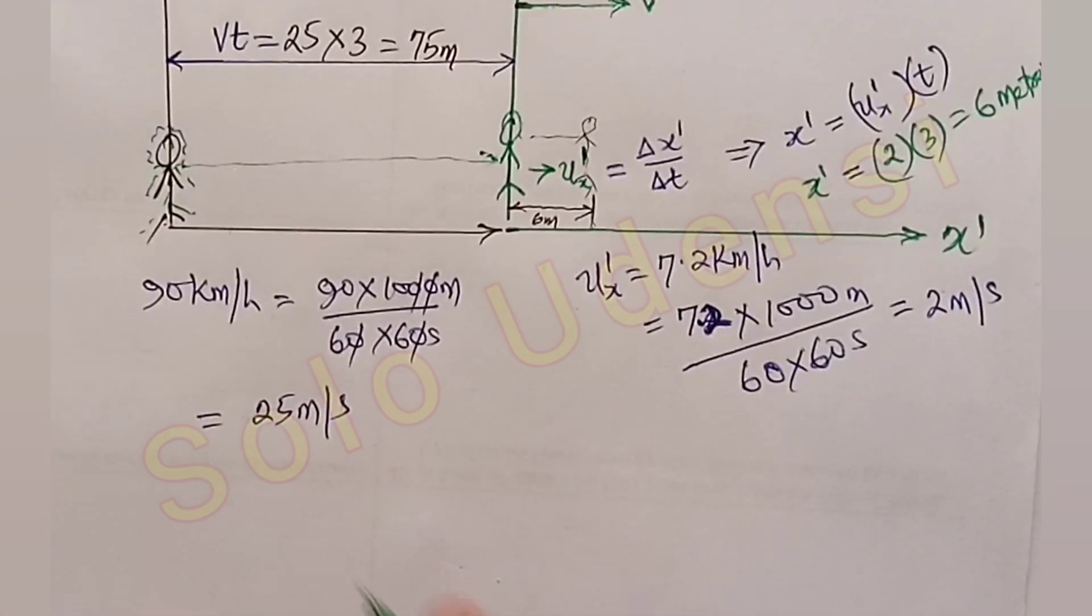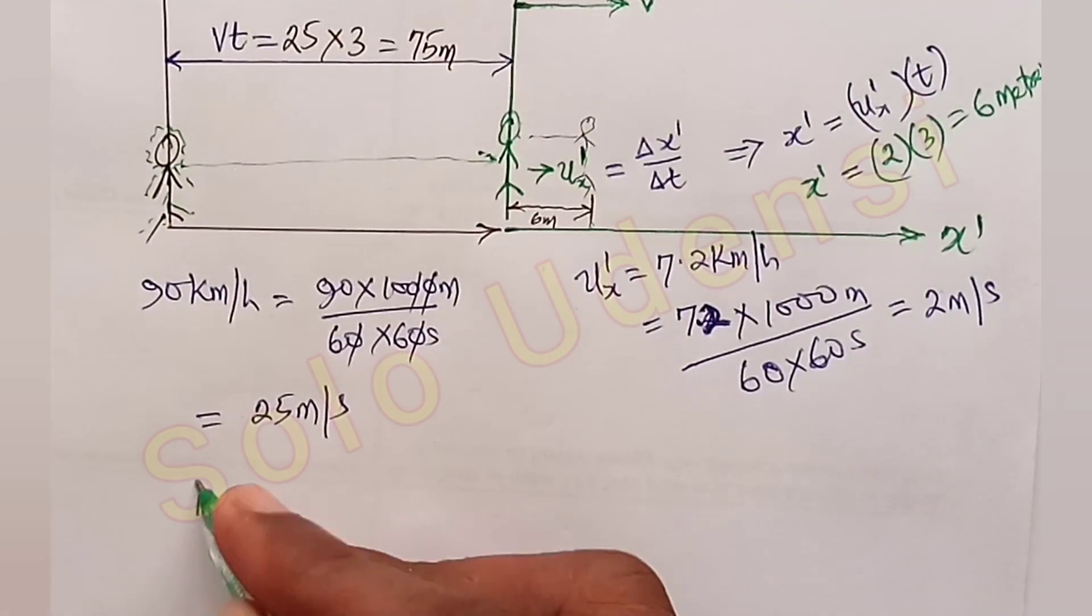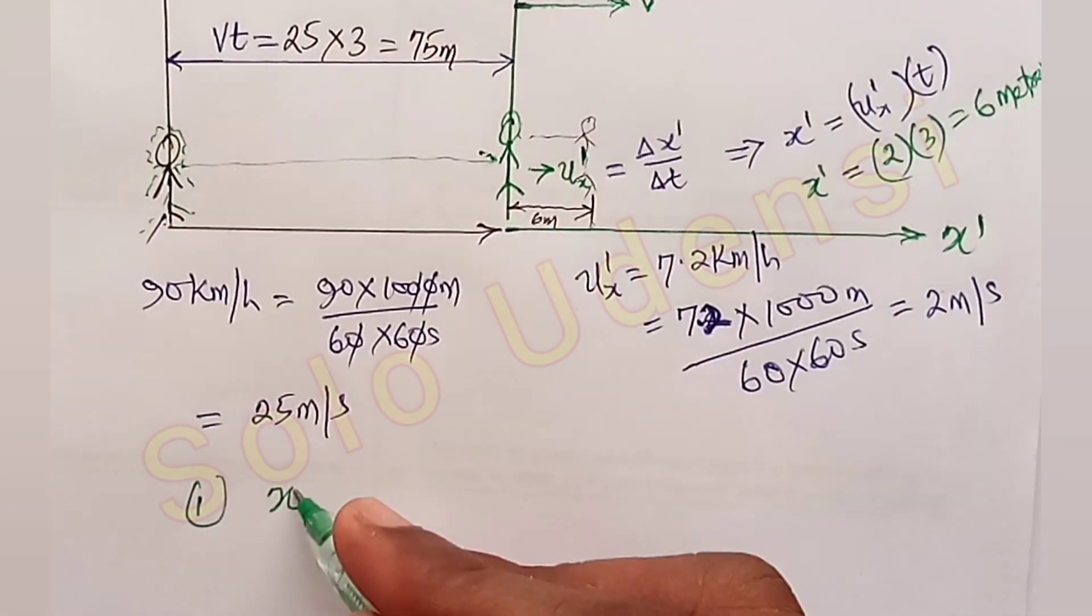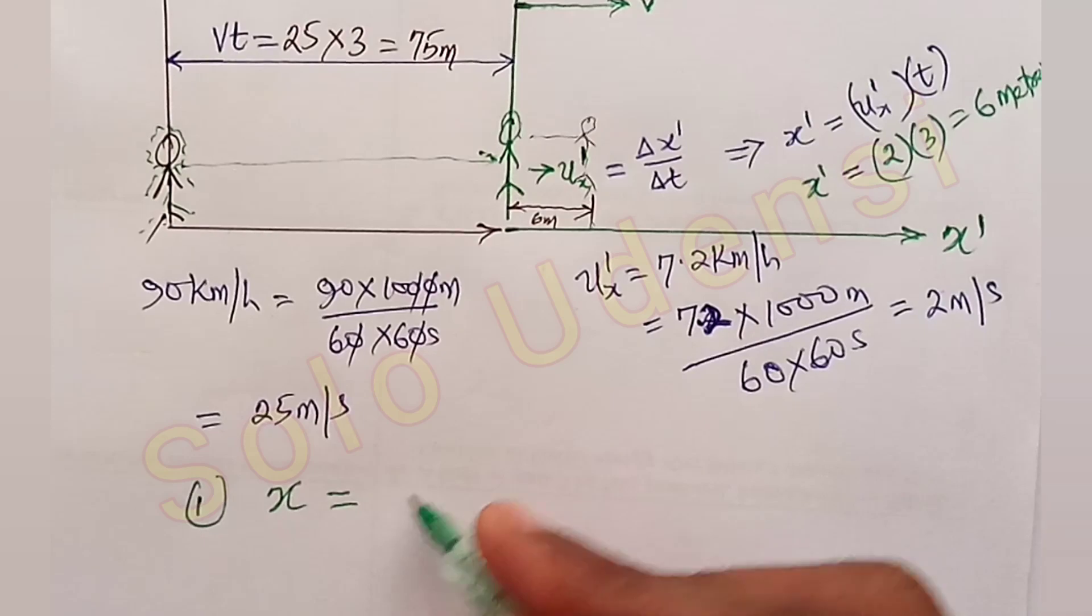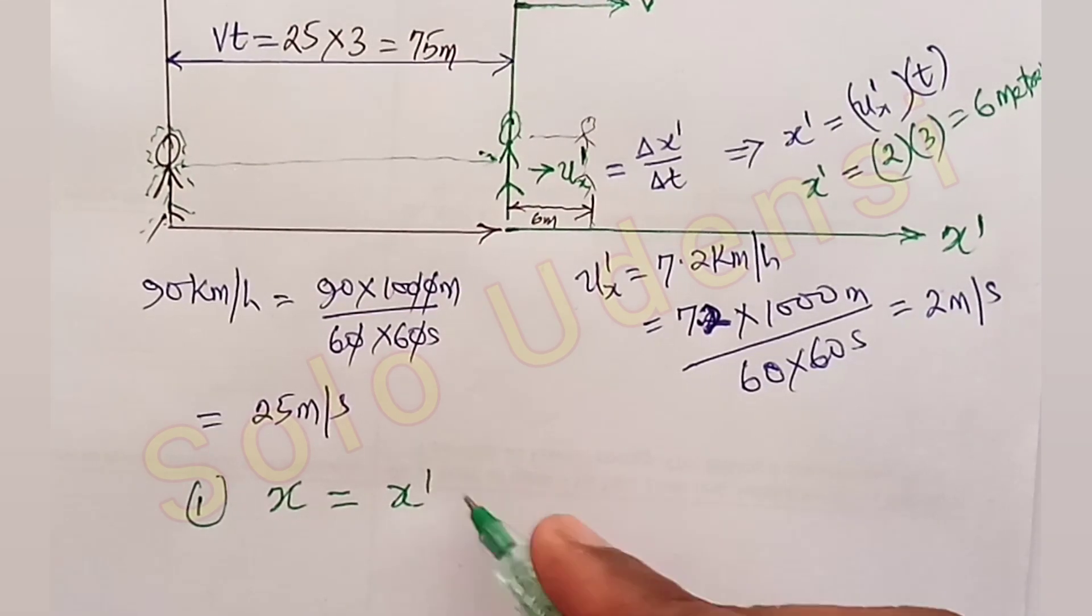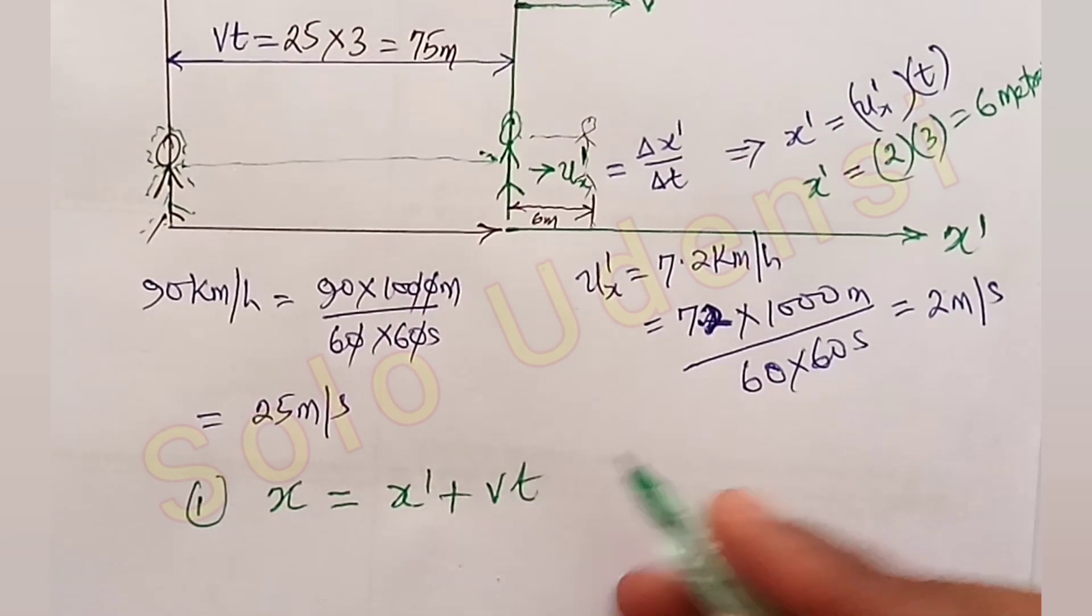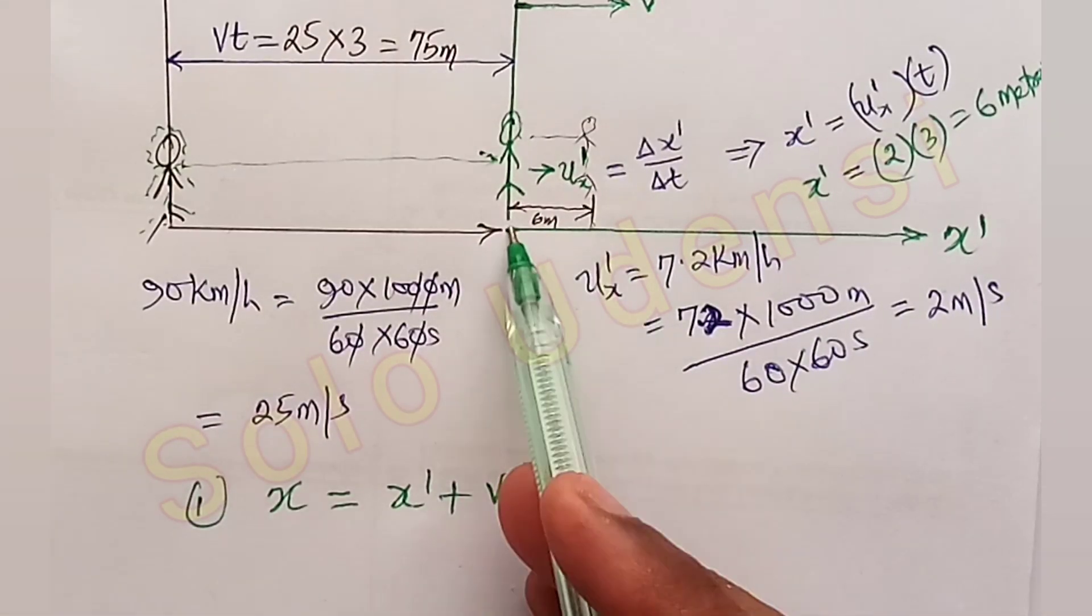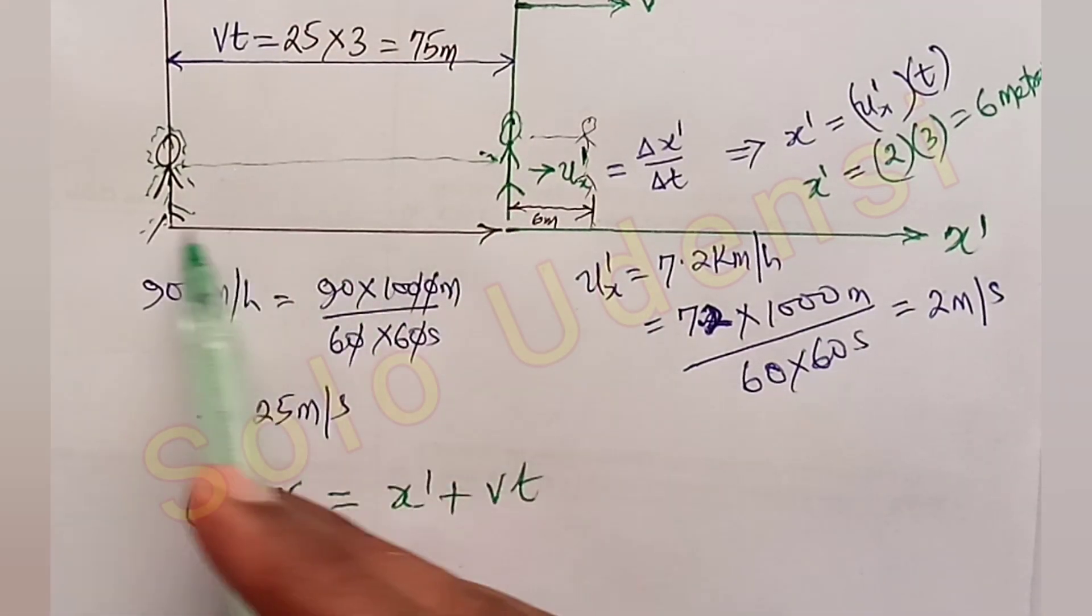So we can use for the first one, the coordinate of the passenger on the ground will be x is equal to x prime plus vt. So x prime is this one, x prime plus vt.